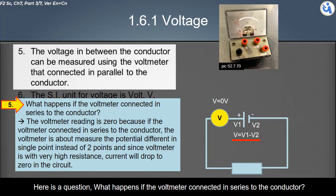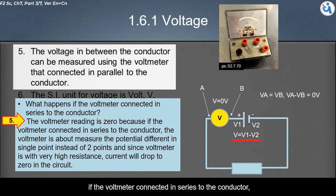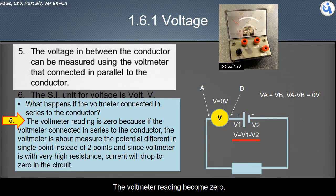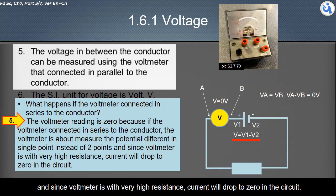What happens if the voltmeter is connected in series to the conductor? The voltmeter reading becomes zero because the voltmeter is measuring the potential difference in a single point instead of two points. And since the voltmeter has very high resistance, current will drop to zero in the circuit.